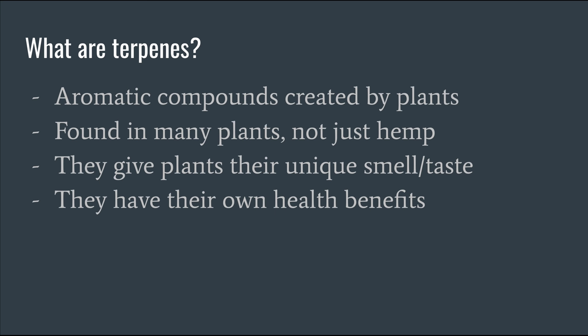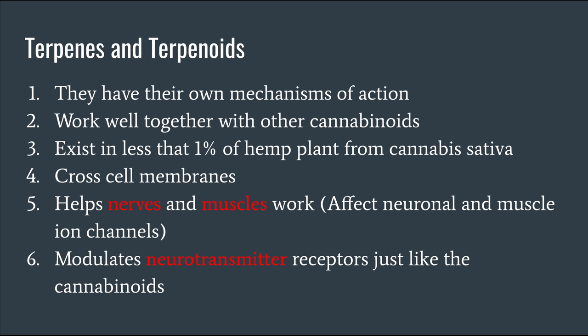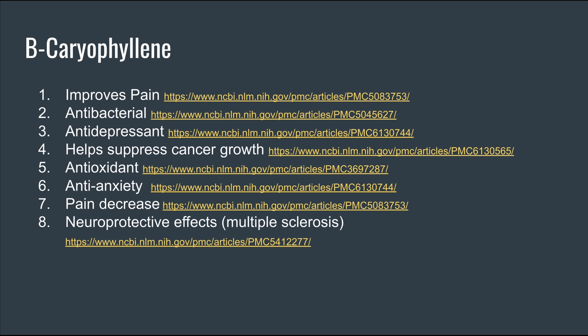Moving on to terpenes — what exactly are they? They're the aromatic compounds made by plants, giving them their unique smell and taste. They're found in many plants, not just hemp. Terpenes and terpenoids have their own mechanism of action aside from what cannabinoids do, and they have a very good entourage effect together with other cannabinoids. They exist in less than one percent of the hemp plant from cannabis sativa, readily cross cell membranes, and help with nerves, muscles, and neurotransmitters.